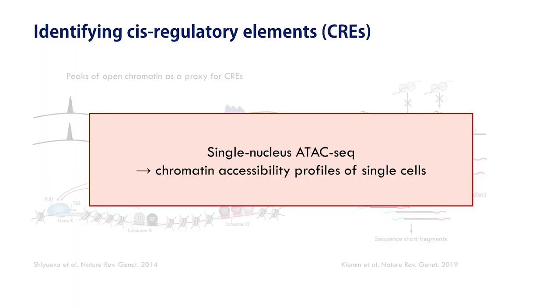At the genome-wide level, we're able to recover putative cis-regulatory elements as regions of open chromatin with many transposition events. The major advantage of ATAC-seq compared to previous technologies is that it is very sensitive, making it possible to extract this information from single cells, allowing us to study cell-fate specification and differentiation and to compare these processes between different species.